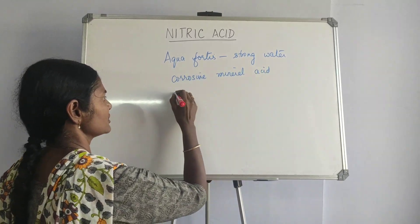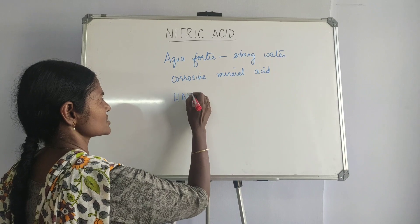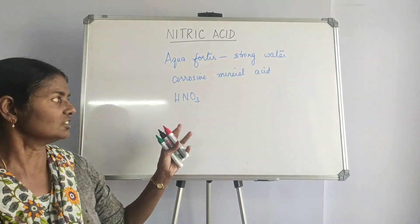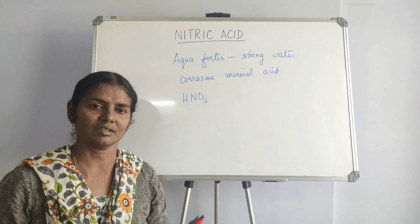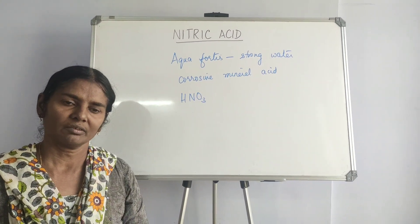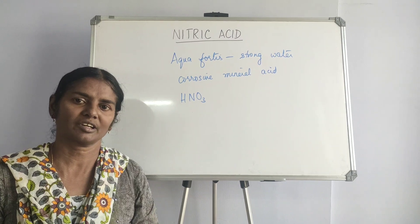And the formula for nitric acid is HNO3. So that is the formula. Highly corrosive, so it is known as strong water. The other name is aqua fortis. Now, today we will look into the laboratory method of preparation.